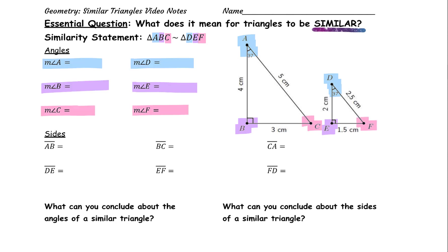From the diagram, we can see that the measure of angle A is 37 degrees. The measure of angle D is also 37 degrees. The measure of angle B is 90, and E is also 90 degrees. The measure of angle C — I don't see a measure there. But what do we know about the angles in a triangle? That's right, they add up to 180 — triangle sum theorem.